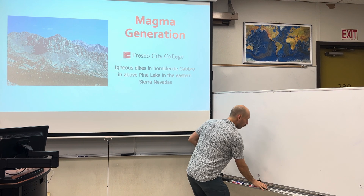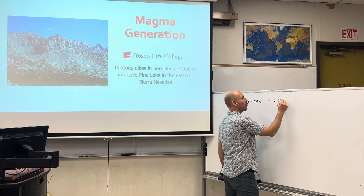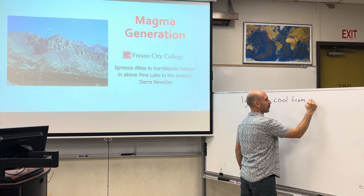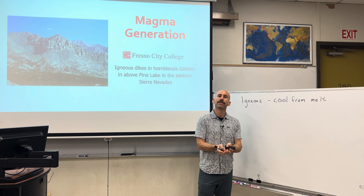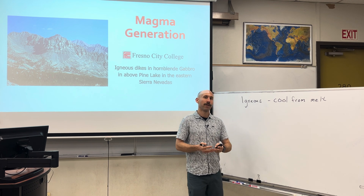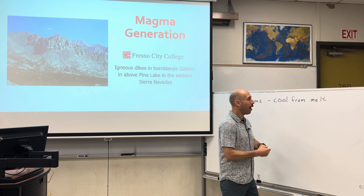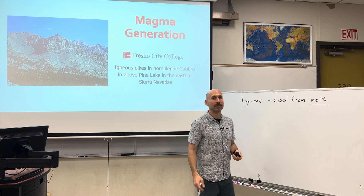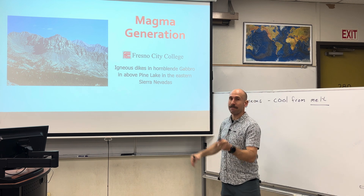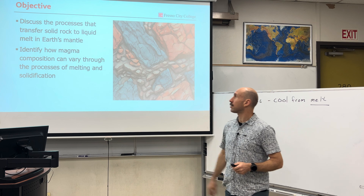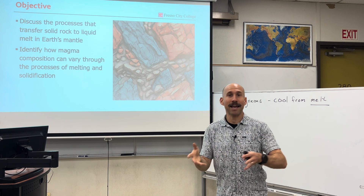Quick review. There are three types of rocks in the rock cycle, and igneous rocks are rocks that cool from a melt. There are two types of igneous rocks: igneous intrusive, meaning the rocks cooled underneath the surface of the earth, and igneous extrusive, where rocks cool on the surface of the earth. The processes that transfer solid rock to liquid melt in earth's mantle, and how magma composition can vary through the process of both melting and solidification.